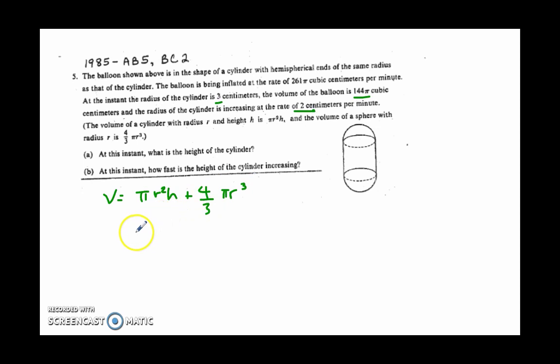And so they are saying, okay, when the volume is 144 pi cubic centimeters, that the radius is going to be 3 centimeters. So let's just sub that in, and we leave h as our variable. That should be a plus sign. 4 thirds pi, and 3 cubed is 27.